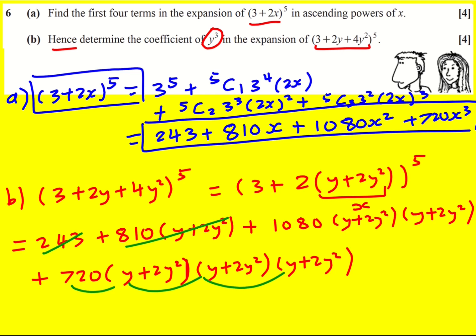From the last term, I get 720y^3. Then from the middle term, I can do y times 2y^2 which gives 2y^3, but I can also do 2y^2 times y. So I get 2 lots of 2y^3, essentially. Don't forget to multiply by 1080. That's the only way to generate the y^3 term.